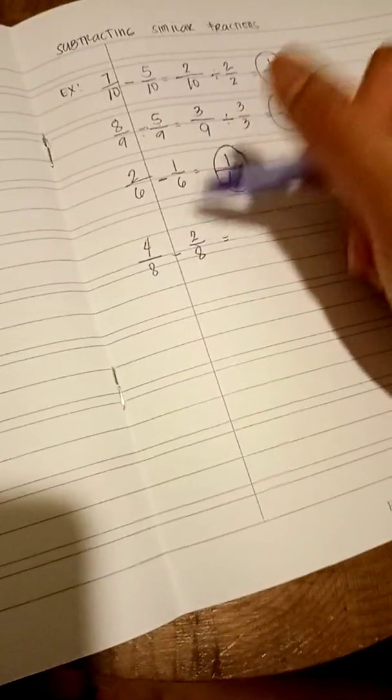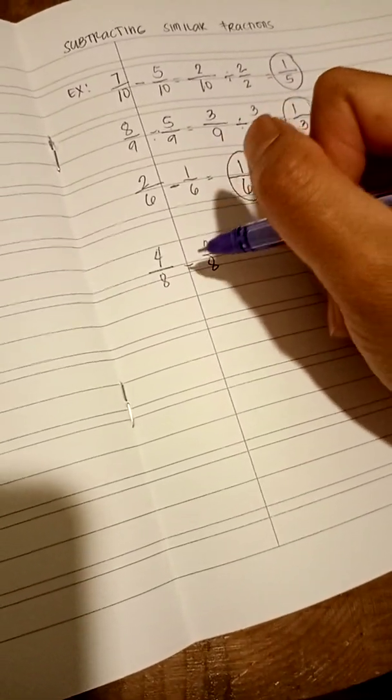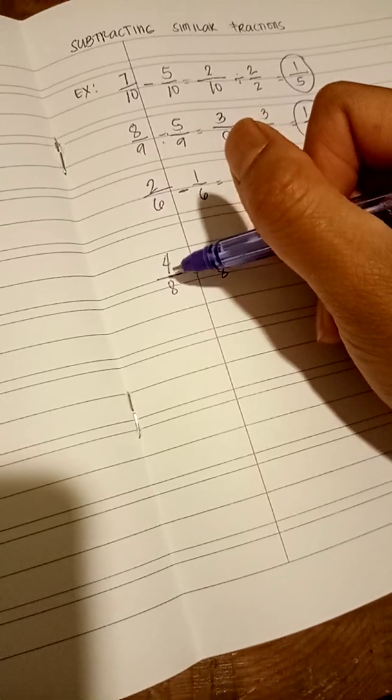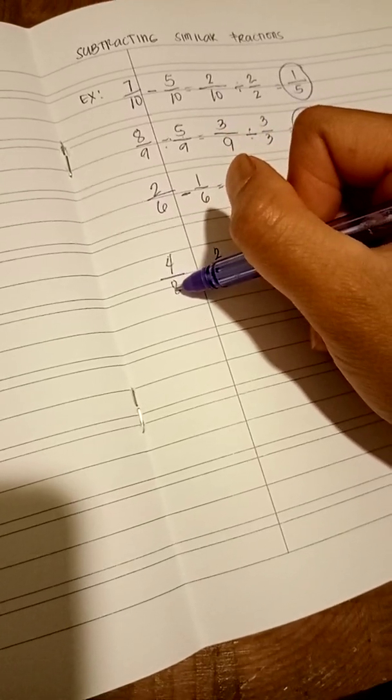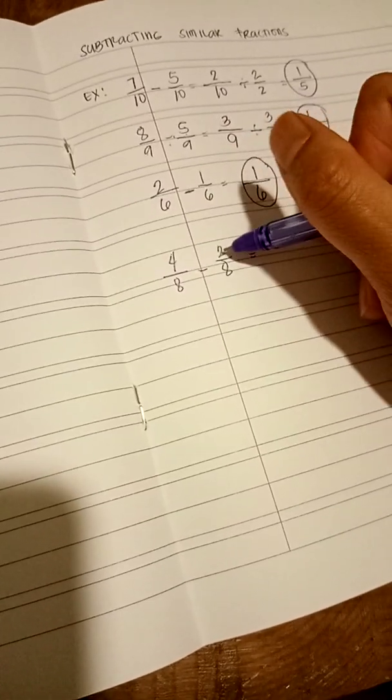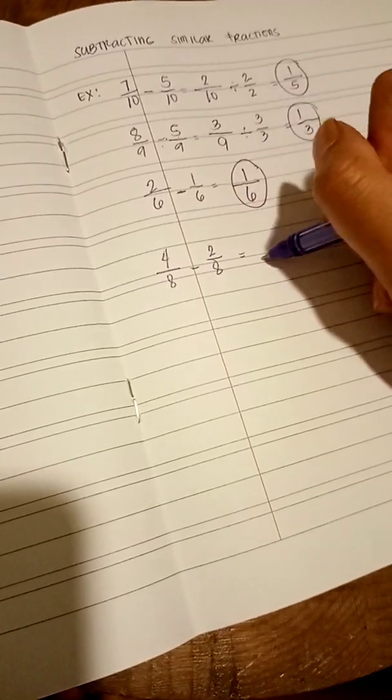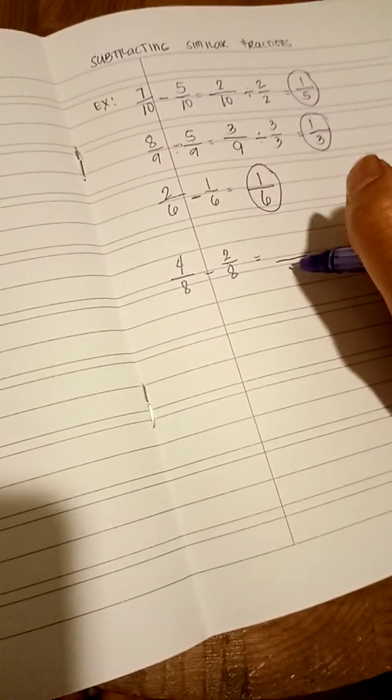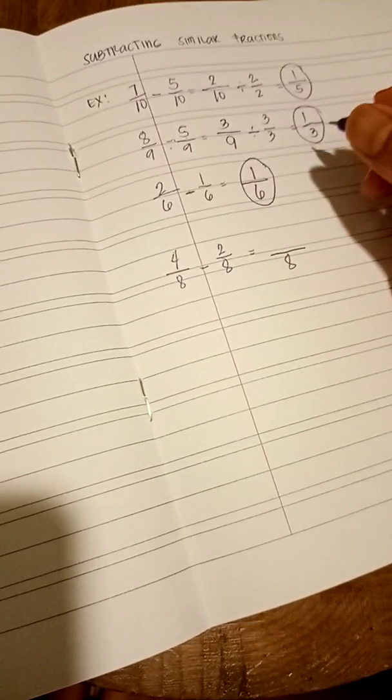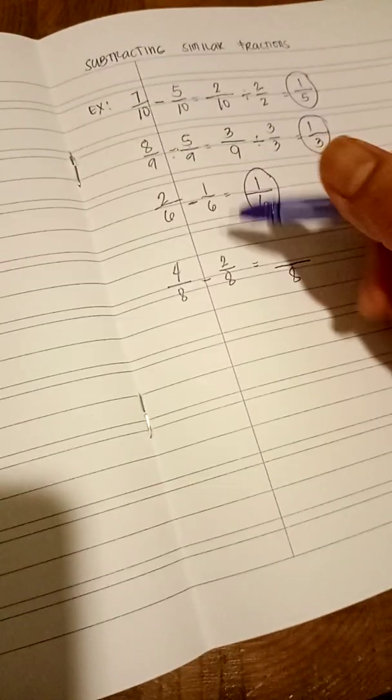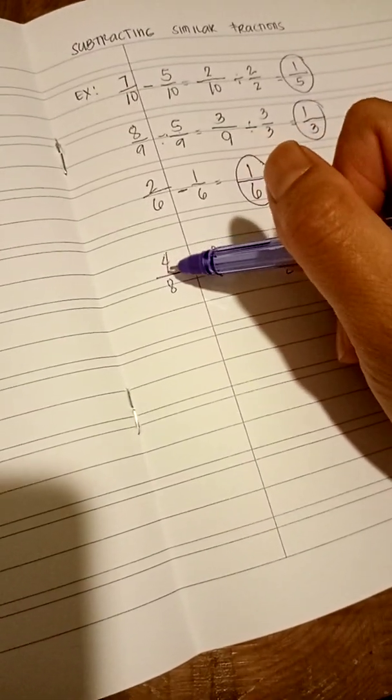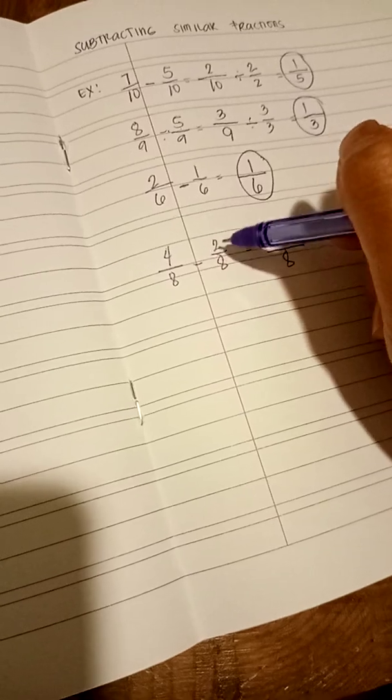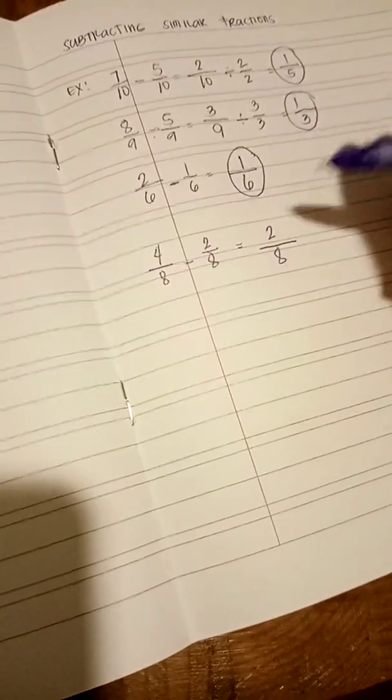Now, let's proceed to another example. Here, we have 4 over 8 minus 2 over 8. Let's copy the common denominator, which is 8. And now, we proceed to 4 minus 2 equals 2.